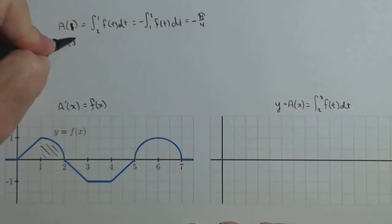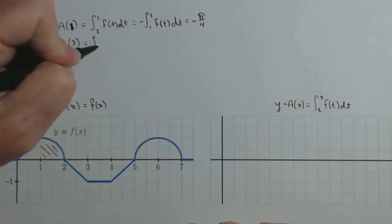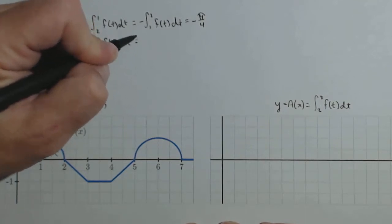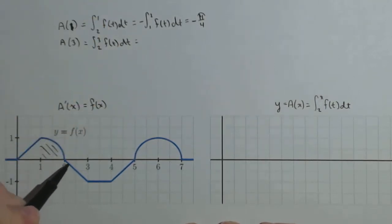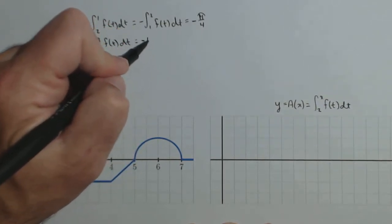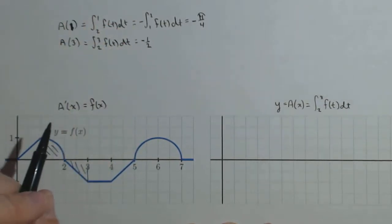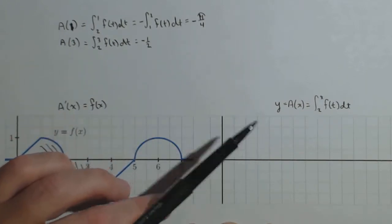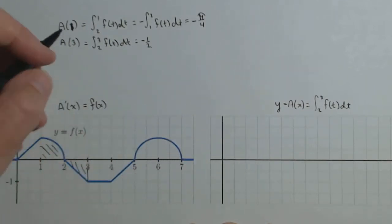It also asks for a(3). We're going to be finding all the values, so we'll keep going with this. So 2 to 3 of f(t)dt is equal to, 2 to 3 is a triangle. Notice it's underneath the x-axis. It has an area of 1 half because it's got a base and height of 1 half, so it's a negative 1 half.